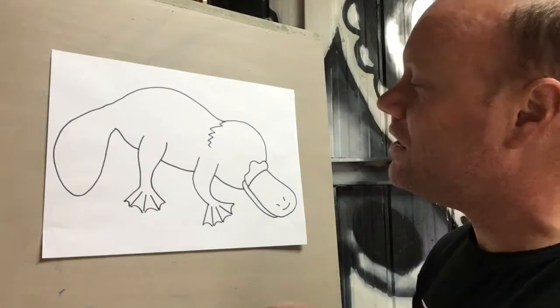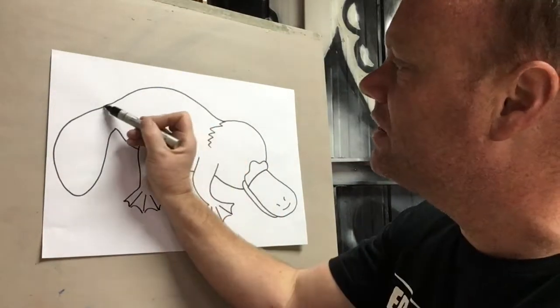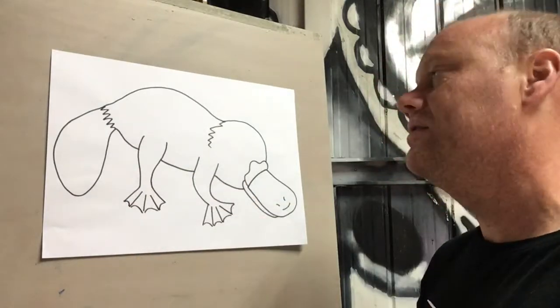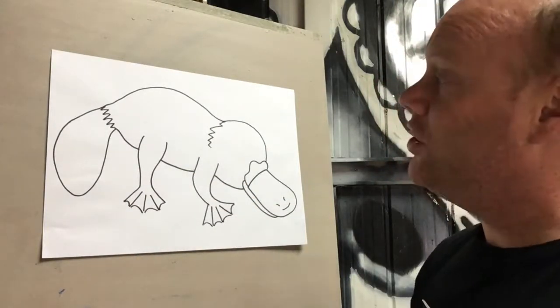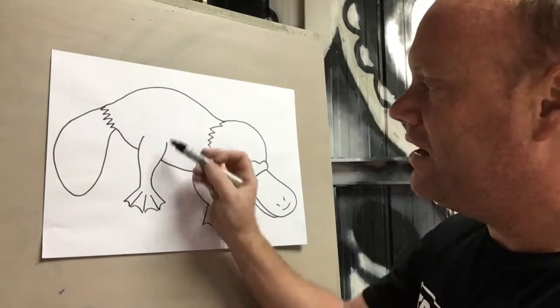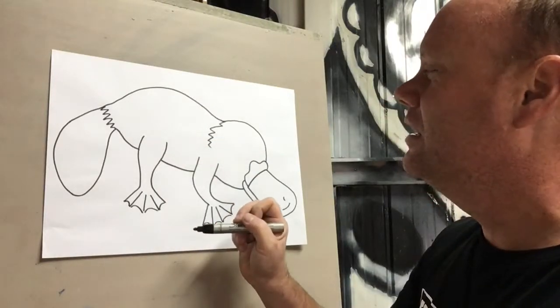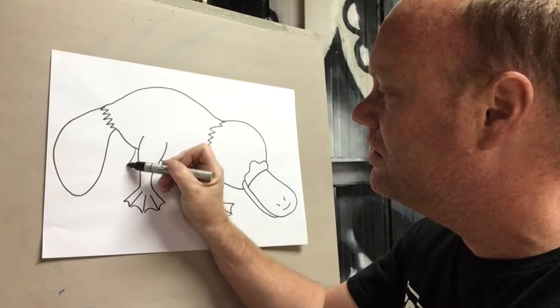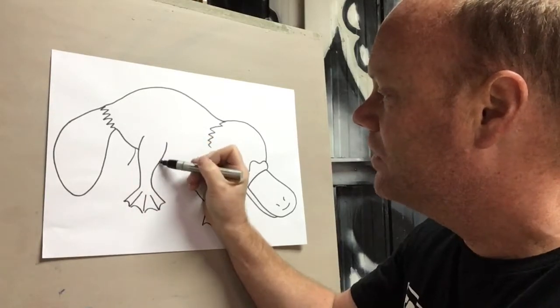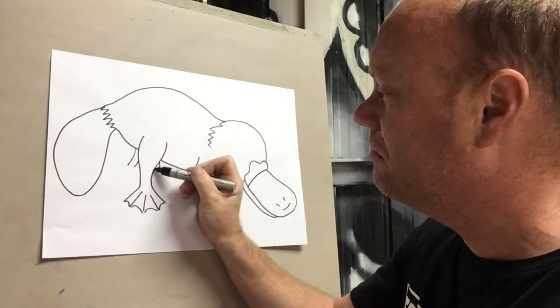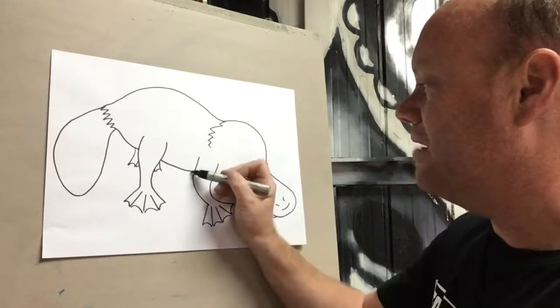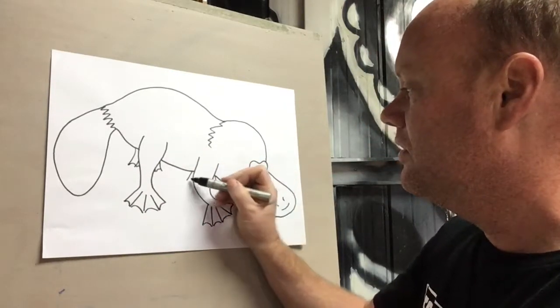I'm going to even put a few little ziggy lines here just to make it look like he's got a few little bits of fur on there. And next, I might make it look like he's got a bit of a back leg, so I might just do something like this. I might do the same here actually, just to make it look like there's a back leg.